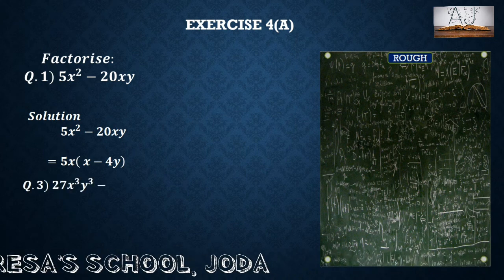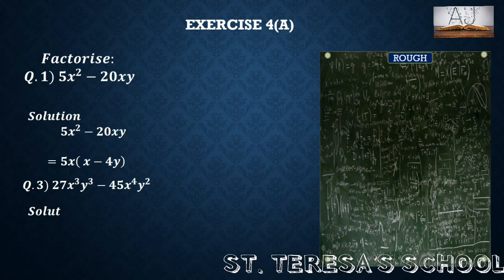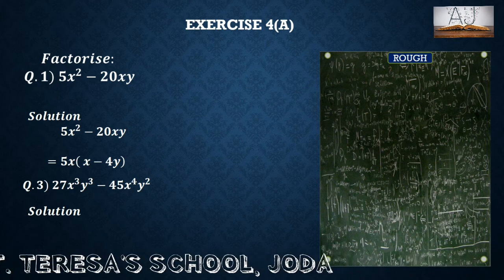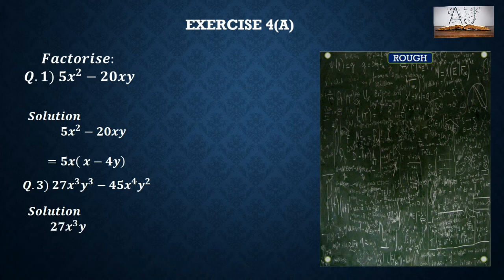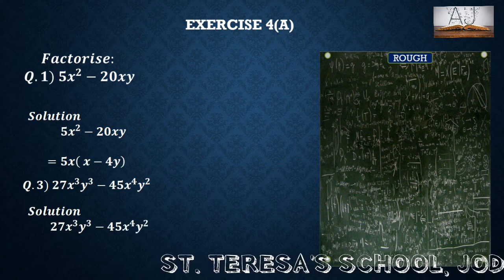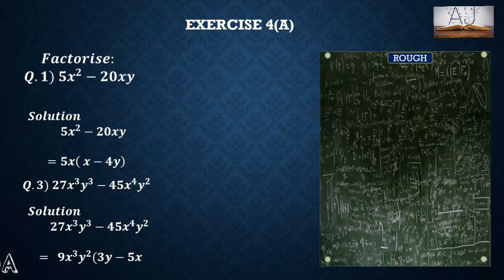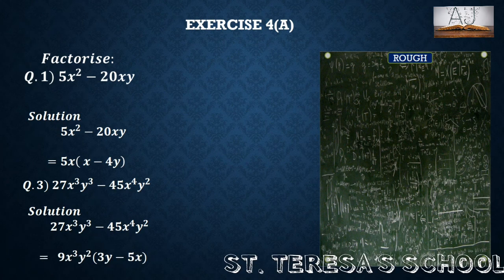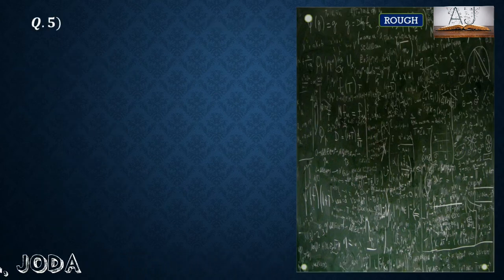Now let us see question number 3: 27x cube y cube minus 45x to the power 4 y square. In both these terms we have 9x cube y square common. So taking 9x cube y square common, what is left in the first term is 3y and in the second is 5x. So the factors are 9x cube y square and 3y minus 5x.